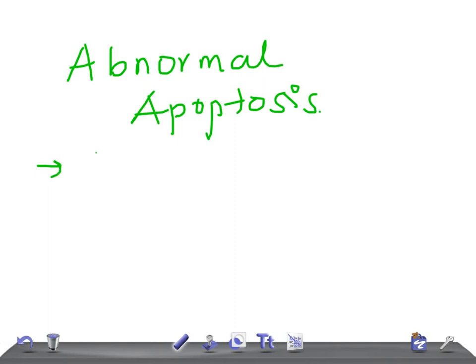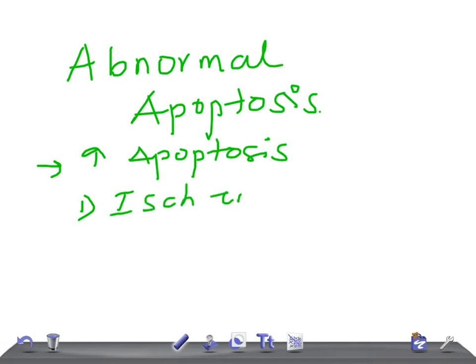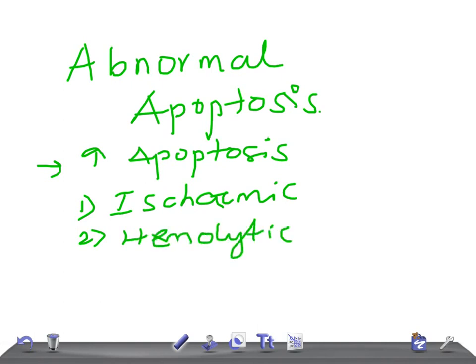Let's talk about increased apoptosis. If there's increased apoptosis, we see conditions like ischemic heart disease — myocardial ischemia. Then we have autoimmune diseases like hemolytic anemia. We also have thrombocytopenia.